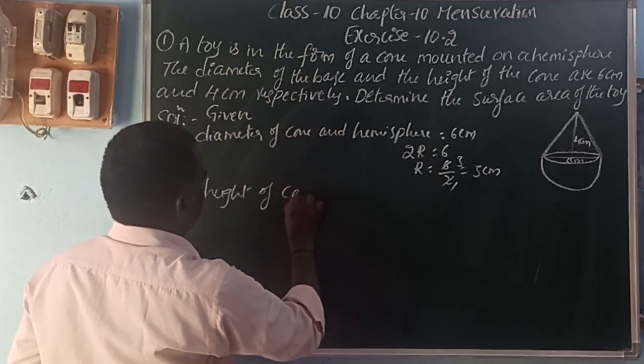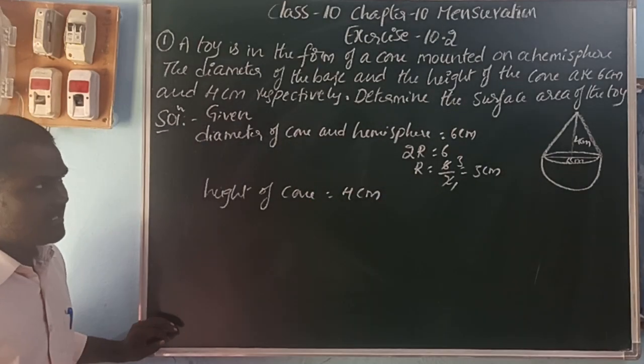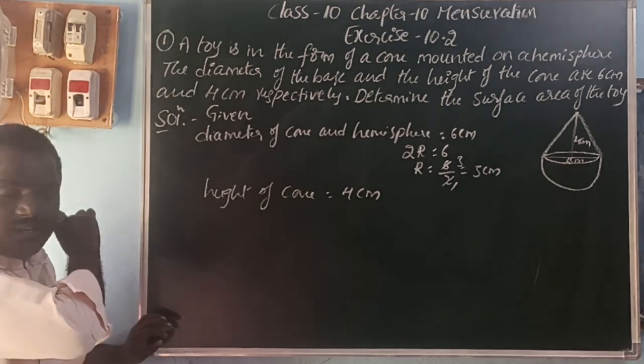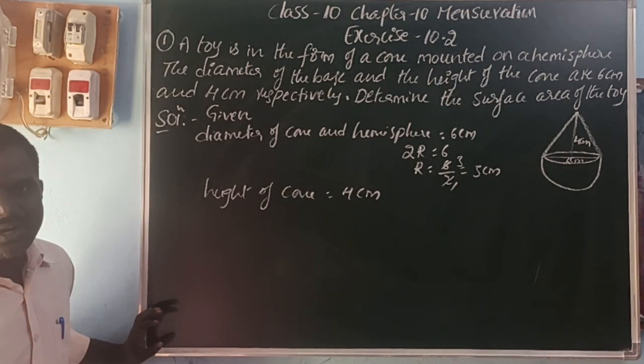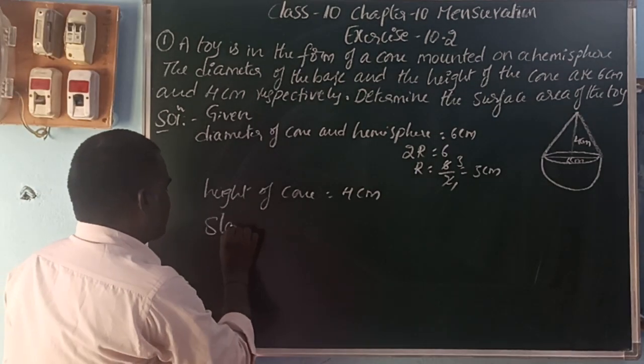Next, height of cone is 4 centimeters. They ask for the surface area. The curved surface area of the cone is πrl where l is the slant height.